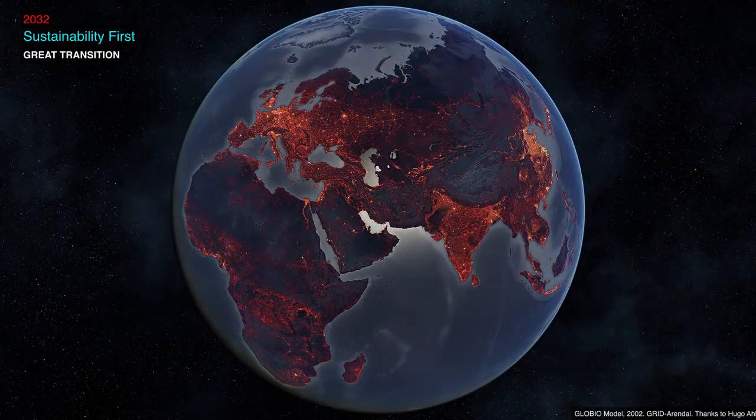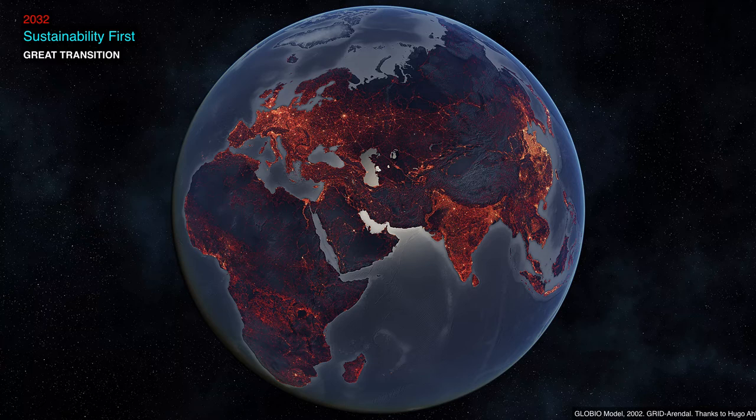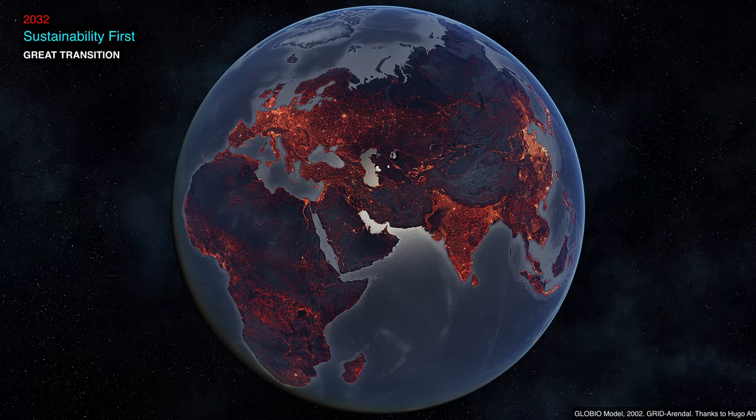We have different scenarios for the future. We could decide to apply sustainable principles in a very serious way. And this is what the planet may look like in terms of human impact by 2032. But we have different scenarios.